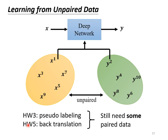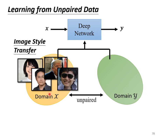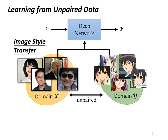You might ask: in what situation would I have no paired data? I can always find a student worker to help me label some data. Let's take an example: image-style conversion. Suppose I want to train a deep network to convert the picture in domain X to the picture in domain Y. The picture of domain X is the avatar of a real person, and the picture of domain Y is the avatar of an animated character. The conversion from a real person's avatar to an animated character's avatar is called image-style conversion.